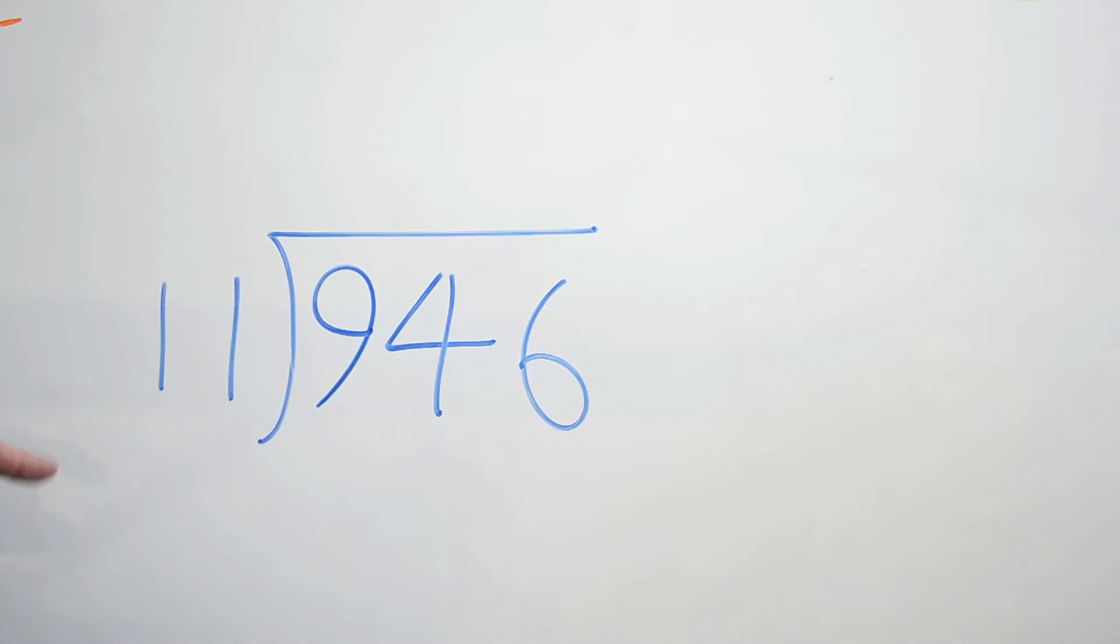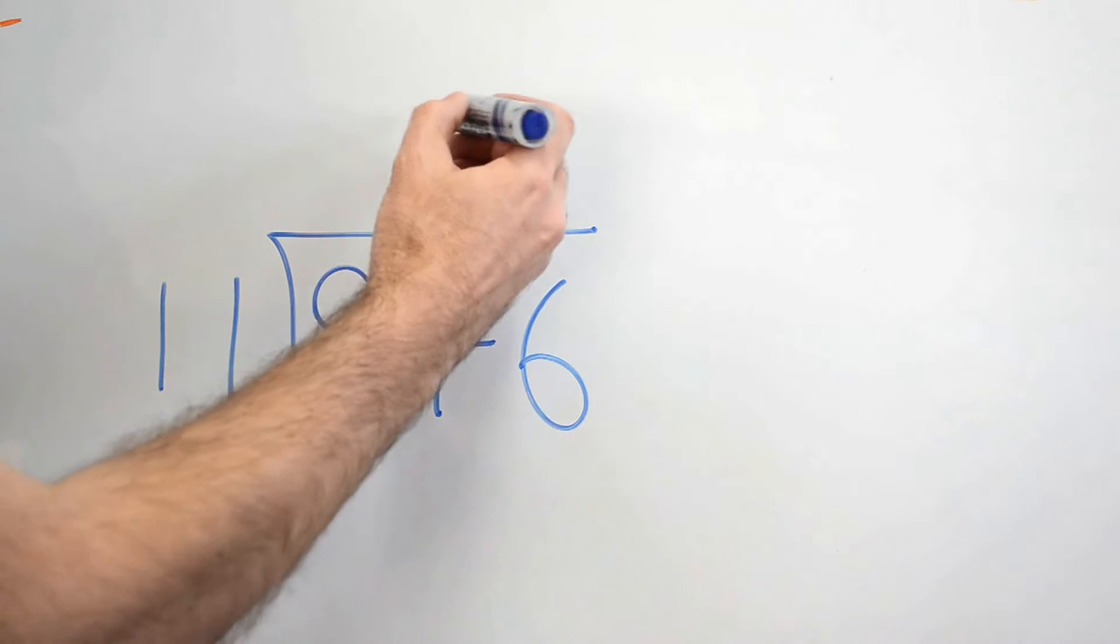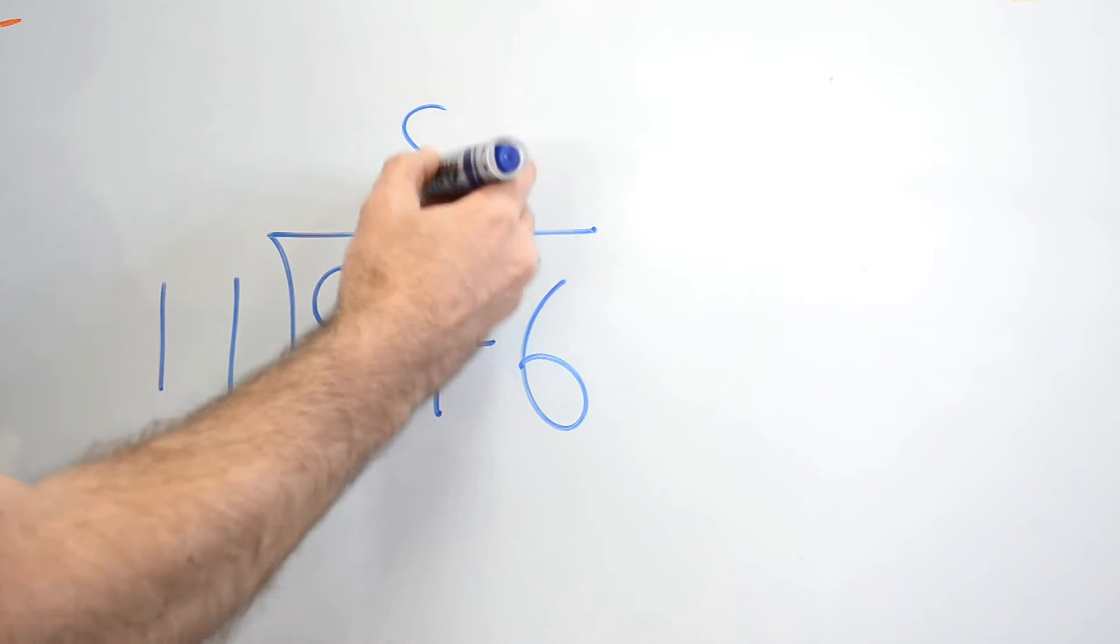So Aisha, what's the closest multiple of 11 that I can fit into 94? I think it might be 88. It's 88, isn't it? So we can go, we know straight away that 11 times 8 is 88, so we can put our 8 up here.